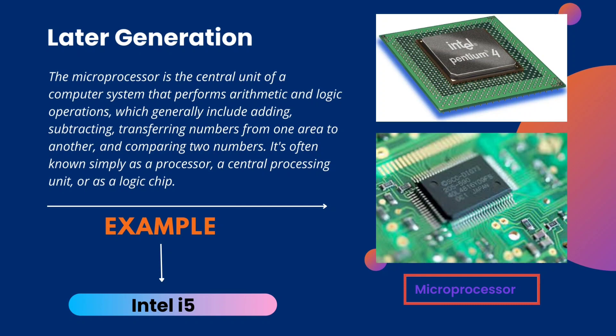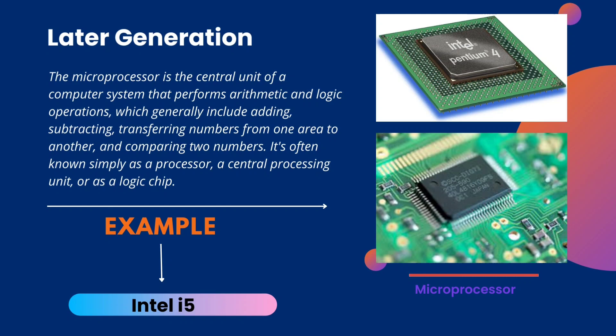The microprocessor is the central unit of a computer system that performs arithmetic and logic operations, generally including adding, subtracting, transferring numbers from one area to another, and comparing two numbers. It is often known simply as a processor, a central processing unit, or a logic chip. These are pictures of microprocessors which can be found in our laptops and computers. For example, the Intel i5 is one of the most used microprocessors in laptops today.